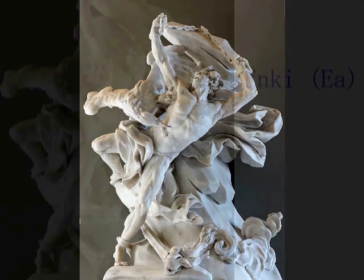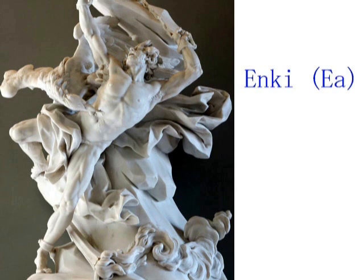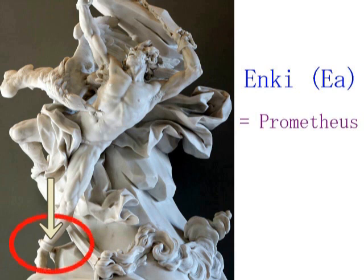もう一度、画面を見ながら説明します。ギリシャ彫刻のプロメテウス像です。私が知る限り、プロメテウス像は2体しかありません。そのうちの1体ですが、足に鎖が巻かれている点に注意してください。プロメテウスは神の意思に反して人間を改造しました。その罪に問われて足に鎖を巻かれ、野に放たれます。プロメテウスは毎日、鳥に体をついばまれるという刑を受けます。言うまでもなく、プロメテウスというのはエンキ、エアを表しています。